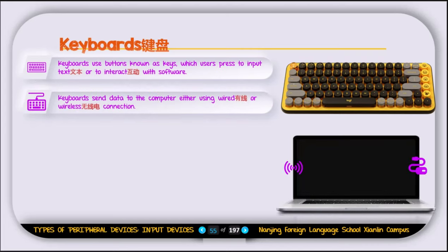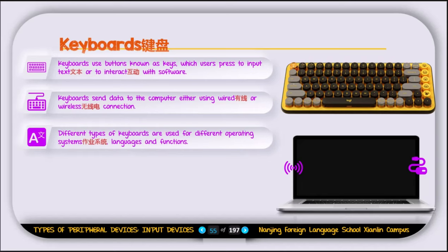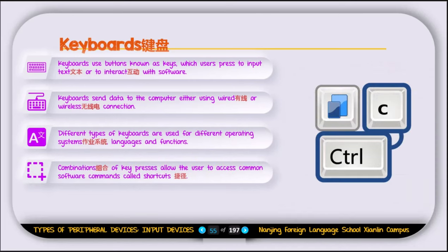Keyboards send data to the computer using either a wired or wireless connection — one connects via USB port and the other wirelessly via Bluetooth. Different types of keyboards are used for different operating systems, languages, and functions. Combinations of key presses allow the user to access common features called shortcuts, such as Control+C or Command+C for copying text.